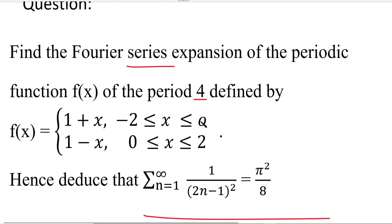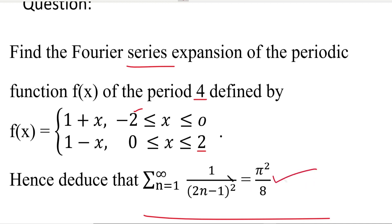In f(x), the limit values are numbers. Usually limits are in terms of pi or l. How to solve problems in those cases, we saw in previous videos. In this video, we will see how to solve when the limits are numbers. First we will find the Fourier series of this function, and then using the Fourier series expansion, we will prove the deduction part. Since x's limits are numbers, we will use the formula in terms of l and substitute the l value.